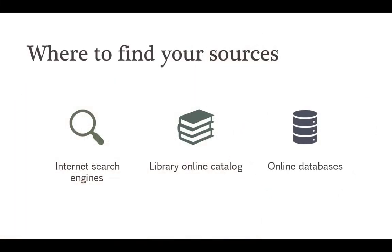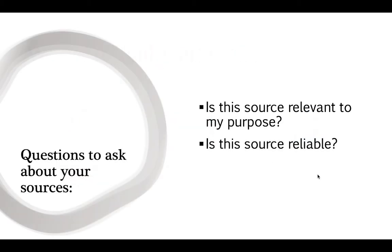Talking about gathering your sources — these are the places you'll probably find most of them: internet search engines and Google. You don't want to use Wikipedia, but if you go down to the bottom of a Wikipedia page, there are sources listed there that you might be able to use. The library's online catalog and online databases are also good sources, and we'll talk more about Galileo next class — that's a combination of online database and catalog covering books, journals, and articles you can find through the library. The key questions to ask are: is this source relevant to my purpose, and is this source reliable?